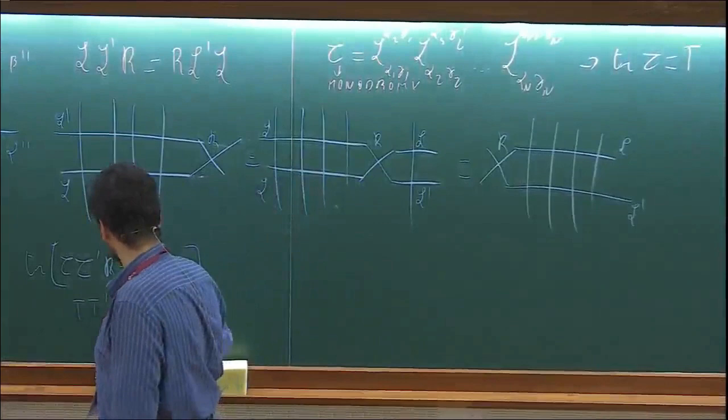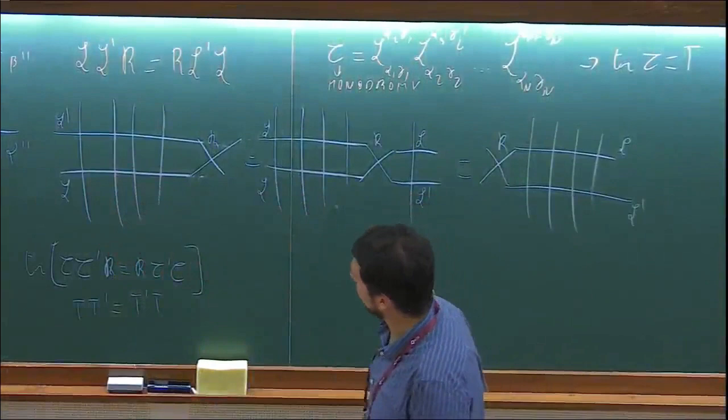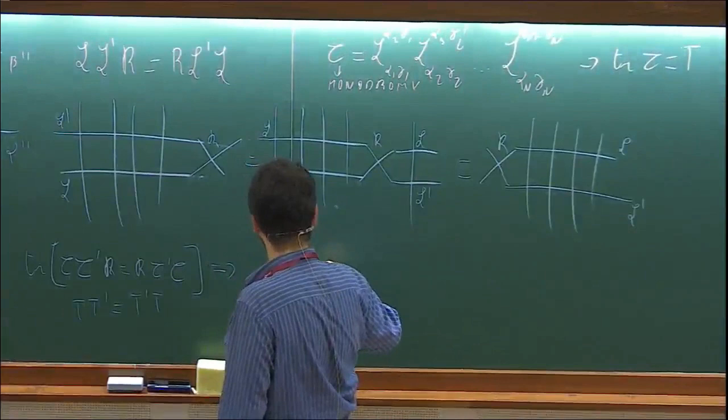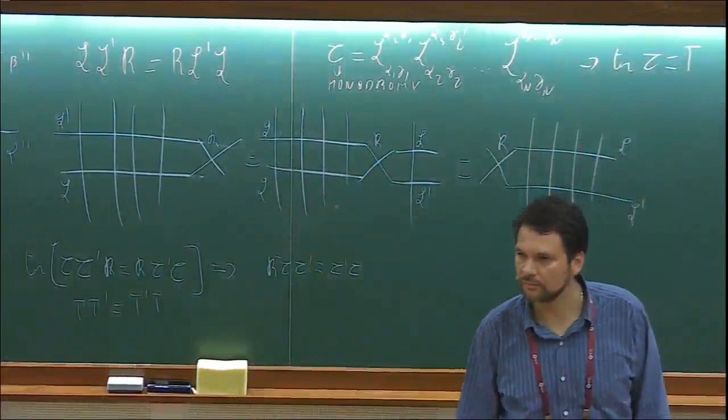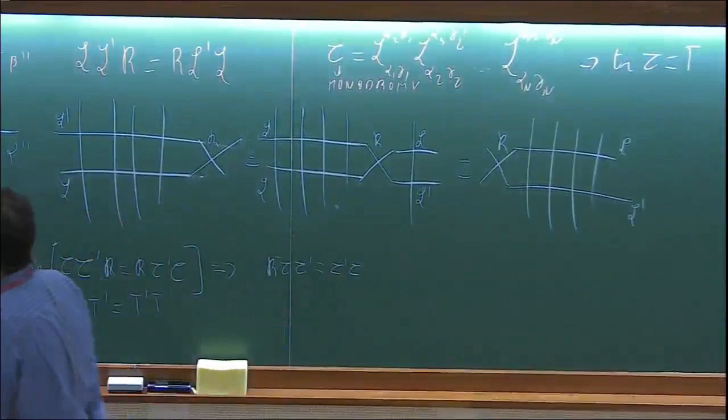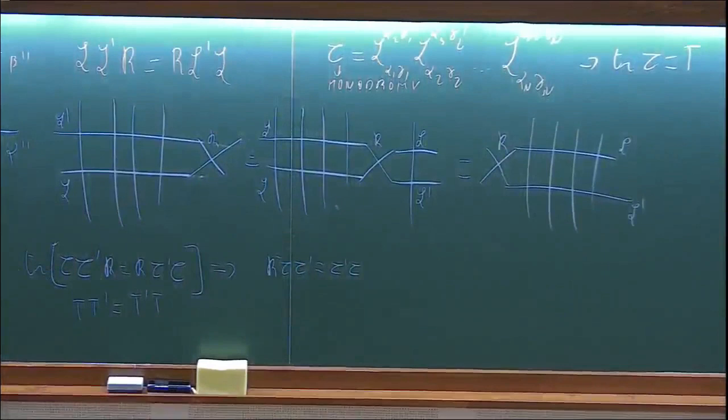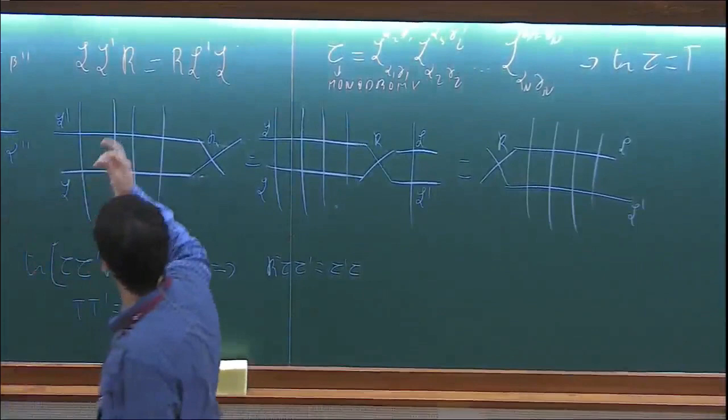If you trace the relation R tau tau' = R tau' tau, by the cyclic property of the trace you get T T' = T' T. Equivalently, R⁻¹ T T' = T' T, and then you take the trace. So finding two six-vertex models with different weights which commute is equivalent to asking whether there exists such a matrix R.